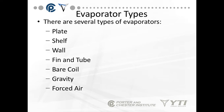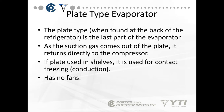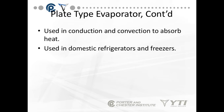There are several evaporator types: plate type, wall shelf, wall evaporator, fin and tube, bare coils, gravity, and forced air. The plate type evaporator is found at the back of a refrigerator — it's a solid plate with tubing or gaps inside. When gas exits the plate it returns directly to the compressor. They're sometimes used on shelves for contact freezing, have no fans, and use conduction and convection to absorb heat, found in domestic refrigerators and freezers like small dorm fridges.